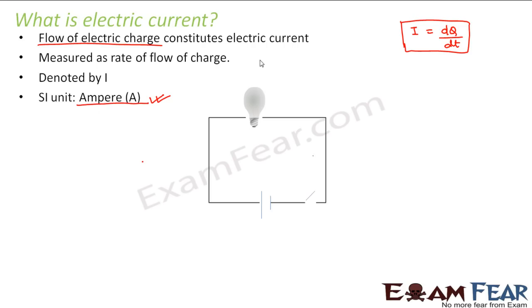So whenever we talk of electric current, let us suppose you have a circuit which consists of a bulb, a battery and a switch. The switch is right now in open mode. Now once you close the switch, the bulb glows. Why does the bulb glow? Because as soon as you close the switch, electric current flows through the circuit. And due to the flow of this electric current, the bulb glows.